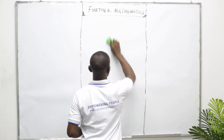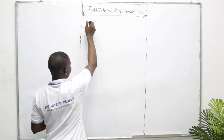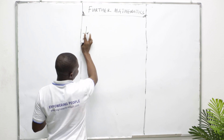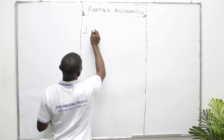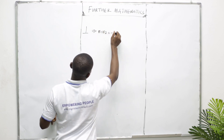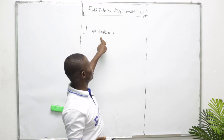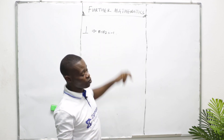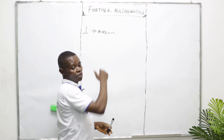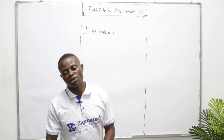Let me differentiate between parallelism and perpendicularity. For perpendicularity, the symbol implies that M1 times M2 equals minus one. We are going to have two gradients in perpendicularity, whereby the first gradient multiplied by the second gradient will give us minus one. So if their product cannot produce minus one, it means such a question or given sample is not perpendicular.